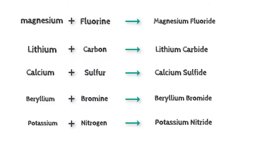In each of these cases, you are changing the ending of the second named element to I-D-E, because the second named element appears further to the right on the periodic table. The ending of the name gives information on the number of elements in a compound. If it ends in I-D-E, there are only two elements present.